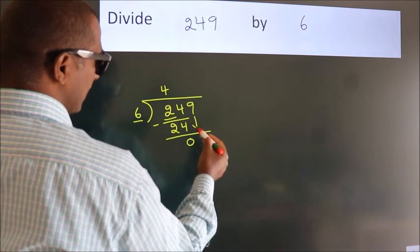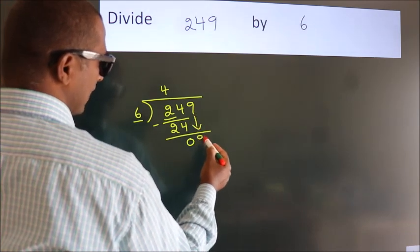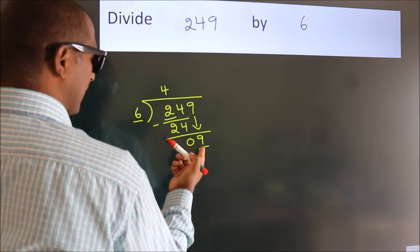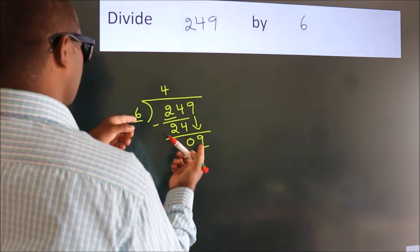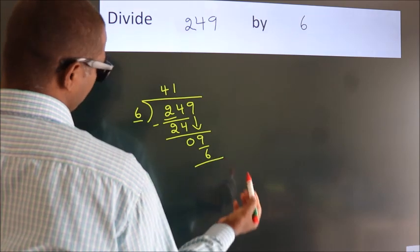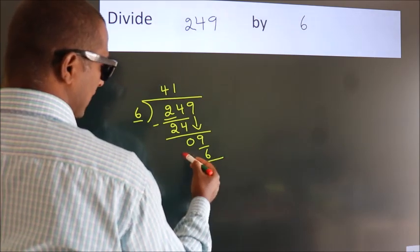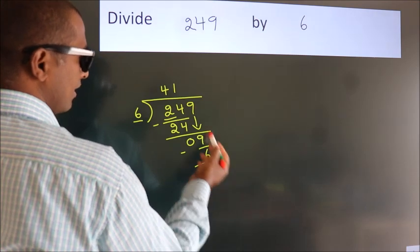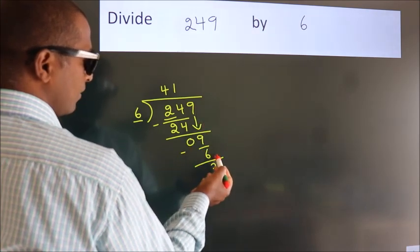Bring down the next number, so 9 down. A number close to 9 in 6 table is 6 ones 6. Now we subtract, we get 3. After this no more numbers to bring down.